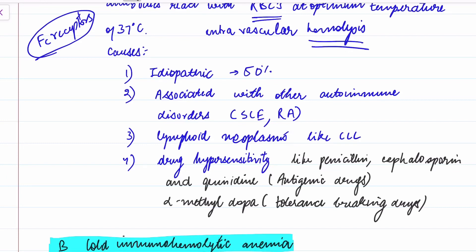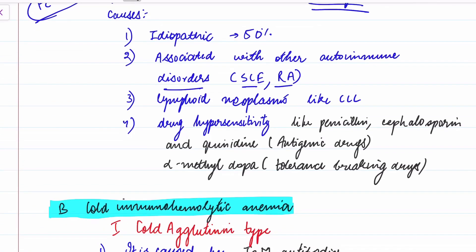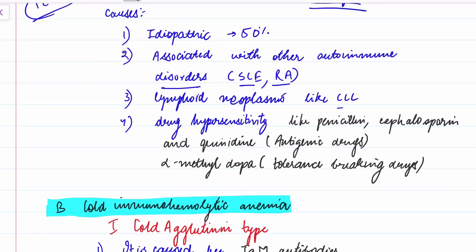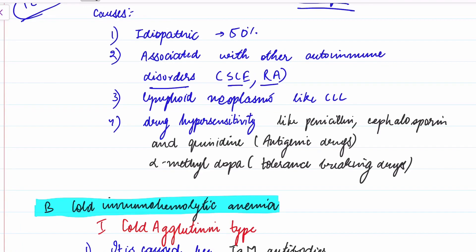The causes of warm antibody type immunohemolytic anemia: 50% of cases are idiopathic. It can also be associated with other autoimmune disorders like SLE, rheumatoid arthritis, Crohn's disease, and lymphoid neoplasms like chronic lymphocytic leukemia, as well as drug hypersensitivity.